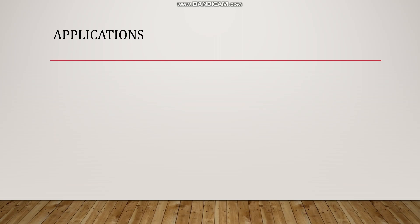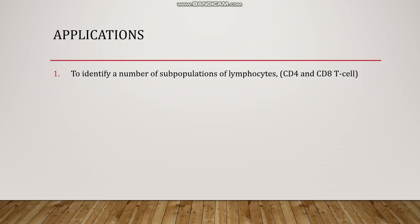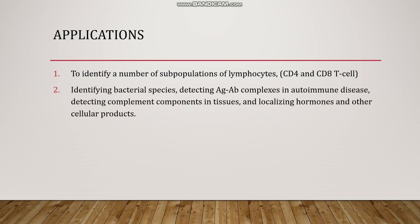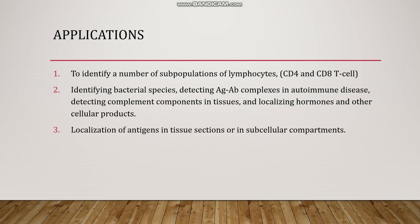Immunofluorescence technique has many applications. It is used to identify subpopulations of lymphocytes, especially CD4+ and CD8+ T cell subpopulations. Other applications include identifying bacterial species, detecting antigen-antibody complexes in autoimmune disease, detecting complement components in tissues, and localizing hormones and other cellular products. An important application is the localization of antigens in tissue or subcellular compartments, mapping the actual location of target antigens. Fluorescence microscopy is a powerful tool for relating the molecular architecture of tissues and organs to their overall gross anatomy.